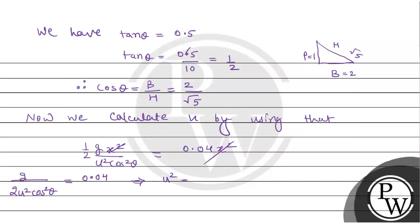So x square cancels out. That means u square equals g upon 2 into 0.04 into 2 upon root 5 square. We will take g as 10. Since we have to calculate u, we will take the root. So g becomes 10, and this 0.04 becomes 100 on top, then 2 square is 4, and root 5 square is 5.